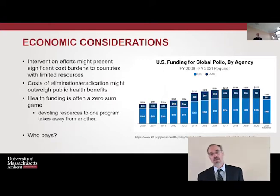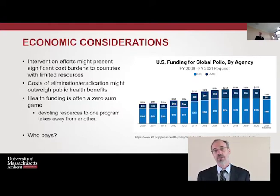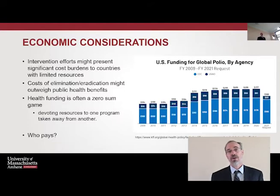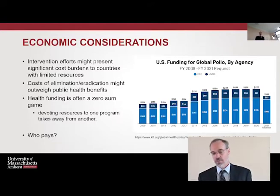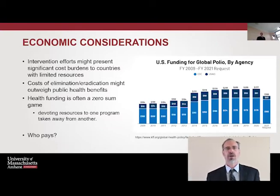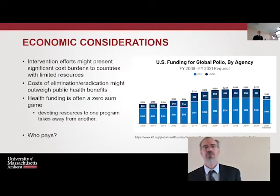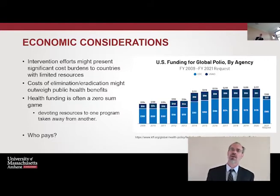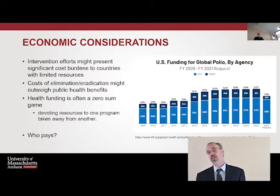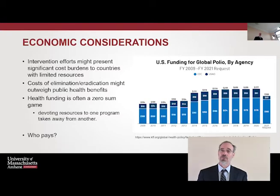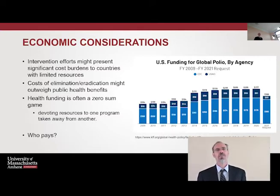Economic considerations: eradication and elimination are expensive, and intervention efforts might prevent significant cost burdens to countries with limited resources. The cost of elimination or eradication might outweigh the public health benefits. Most importantly, health funding is a zero-sum game — devoting resources to one program takes away from another. Looking at a graph of polio funding over the years, more and more money is being put into polio while cases are becoming fewer and fewer. The question is whether that expense justifies the outcome and whether we're taking money away from other public health programs. And the final question: who pays for these programs?